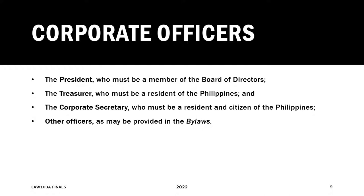Finally, there are other officers as may be provided in the bylaws. The corporation, through the bylaws, has sufficient room to add other positions that may qualify as corporate officers. So they are not limited to the president, treasurer, or Corsec. Through the bylaws, they can enumerate and include additional positions — simply by stating in the bylaws that a position, such as Administrative Officer 5, is a corporate office and that the person occupying it is a corporate officer.